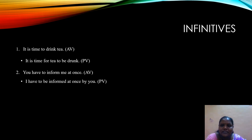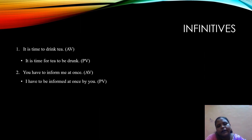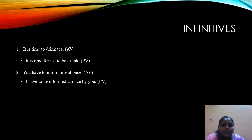Next are infinitives. For example, 'It is time to drink tea' — we use 'be' and the third form of the verb: 'It is time for tea to be drunk.' 'You have to inform me at once' becomes 'I have to be informed at once by you.'